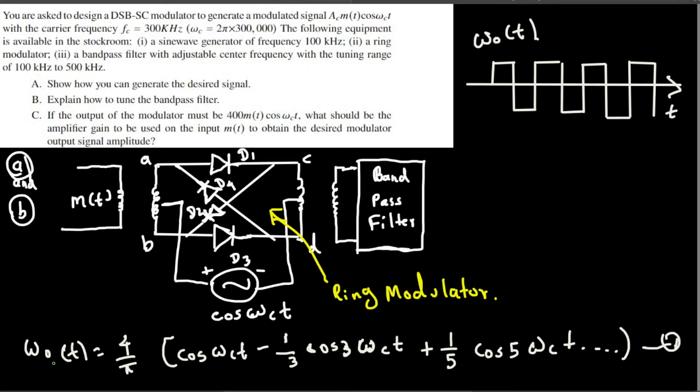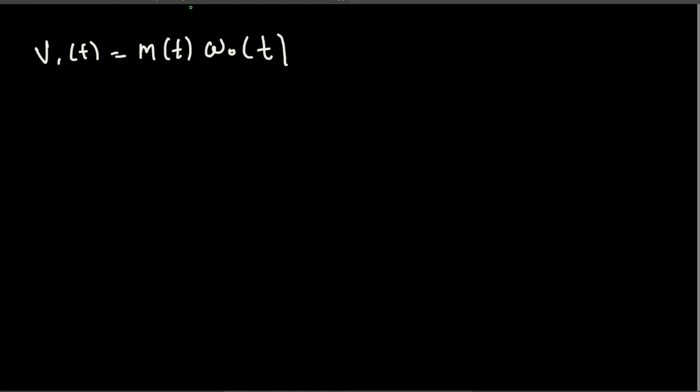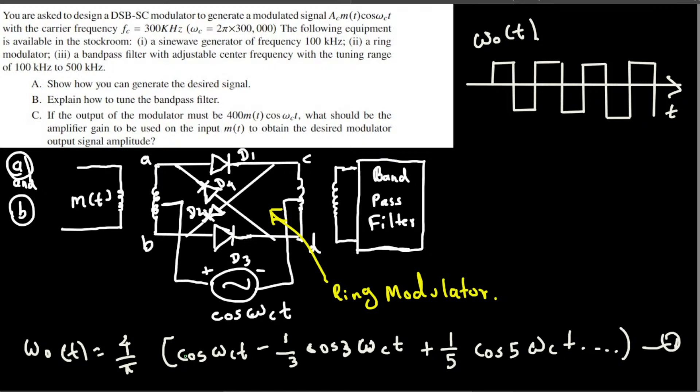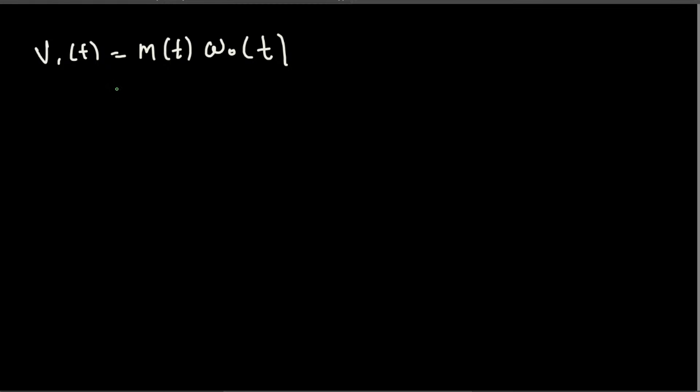This ωn(t) expression is multiplied by m(t). So what we are going to end up having is all the terms we have here multiplied by m(t). So we will have an equation like 4/π·m(t)·cos(ωnt) - 1/3·m(t)·cos(3ωnt) + ...